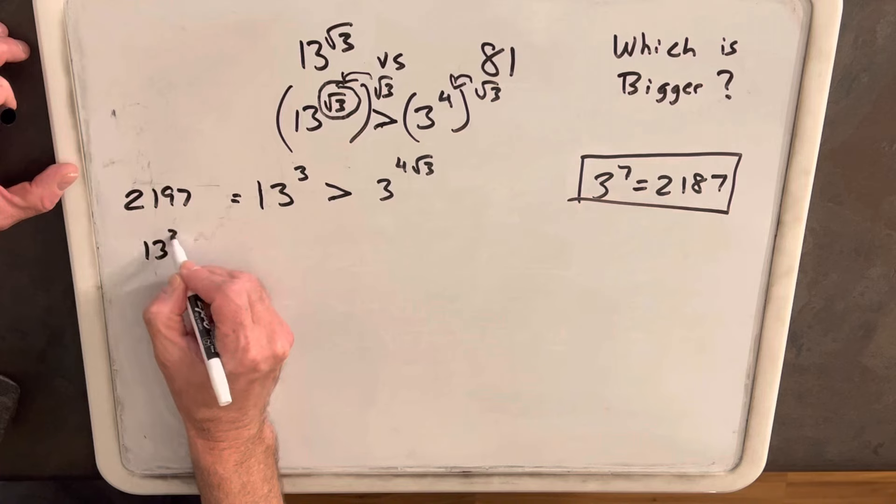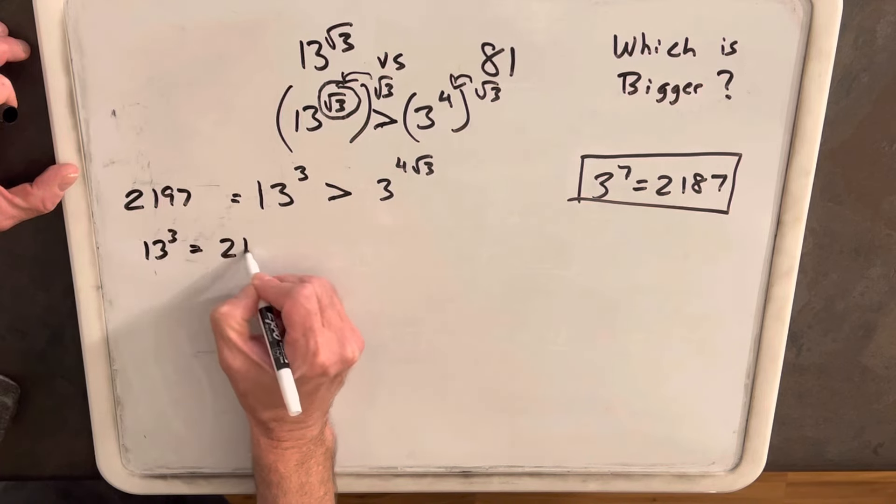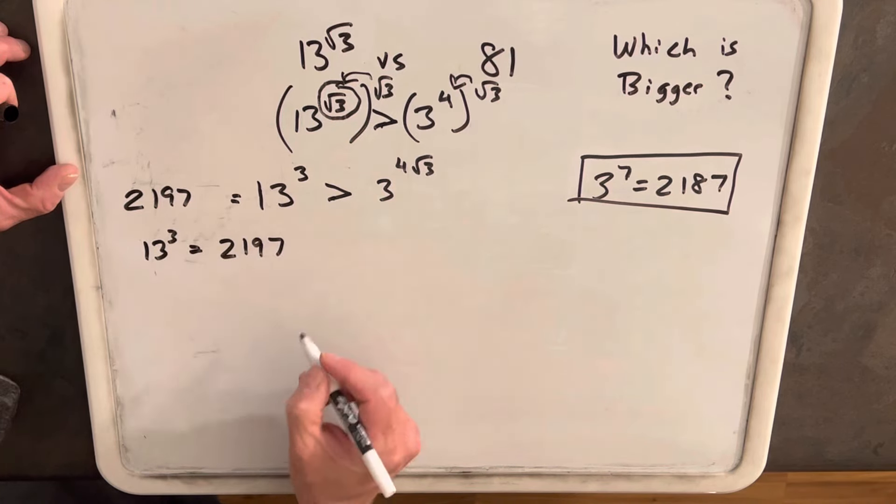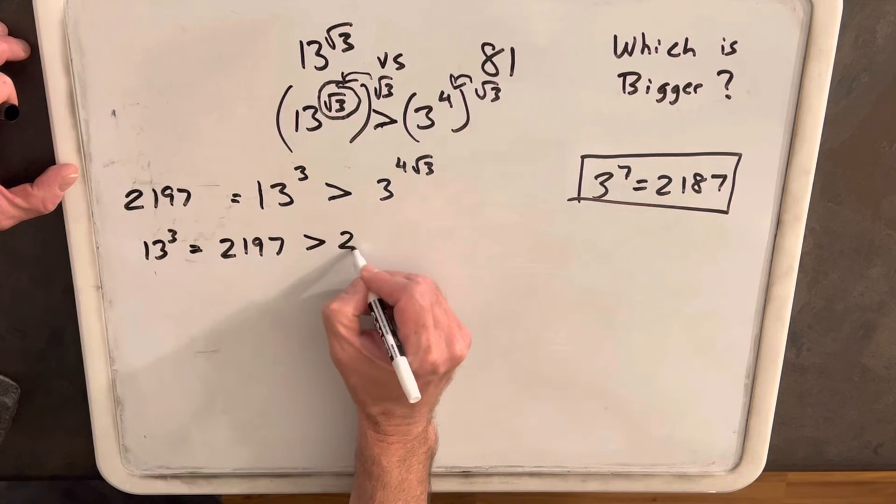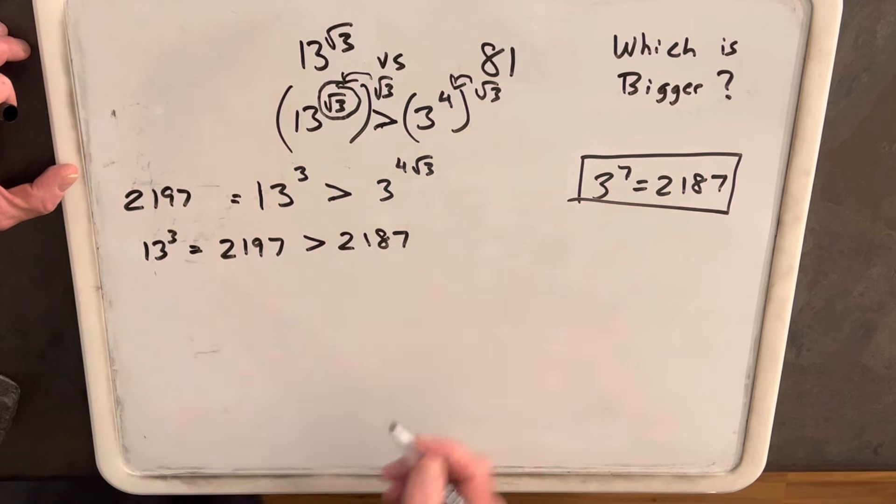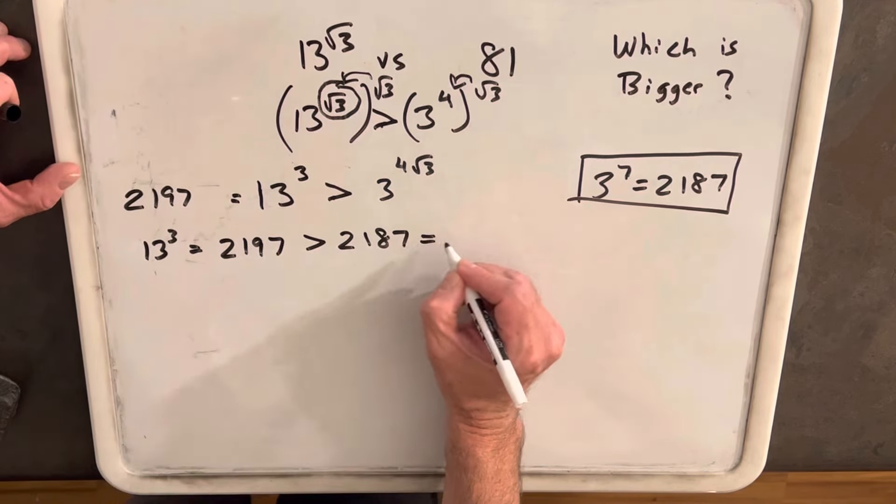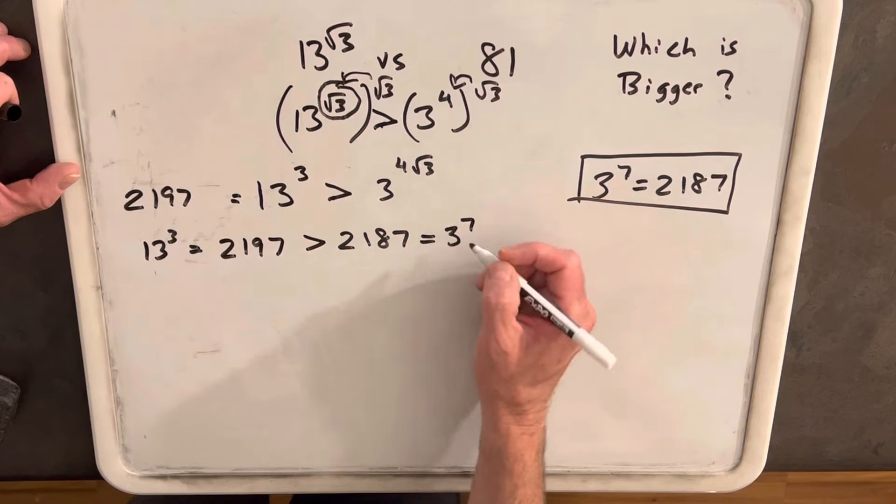And so we can say 13 cubed equals 2,197. But that's actually a little bit greater than 2,187, which is the same thing as 3 to the 7th.